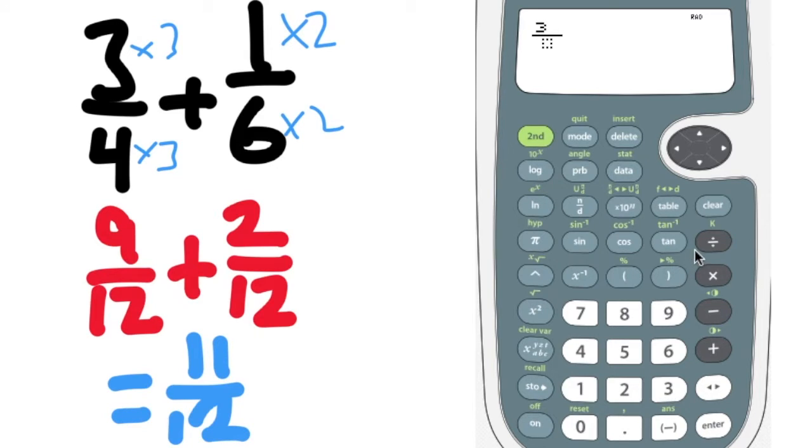So you click it. You type in the 3. Press the arrow to leave the numerator and go down into the denominator. Type the 4. You can see there's a little arrow in the denominator. We press the arrow to get out. Now we're adding, so we put a plus sign.